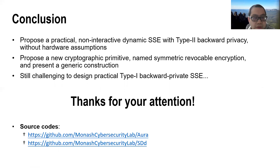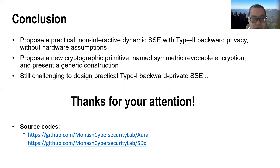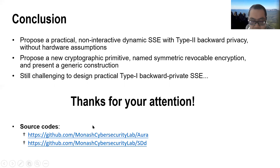To this end, we propose a new cryptographic primitive called Symmetric Revocable Encryption and present a generic construction. Still, it is challenging to design a practical Type 1 backward private SSE. Our source codes are available on GitHub. That's the end — thanks for your attention.